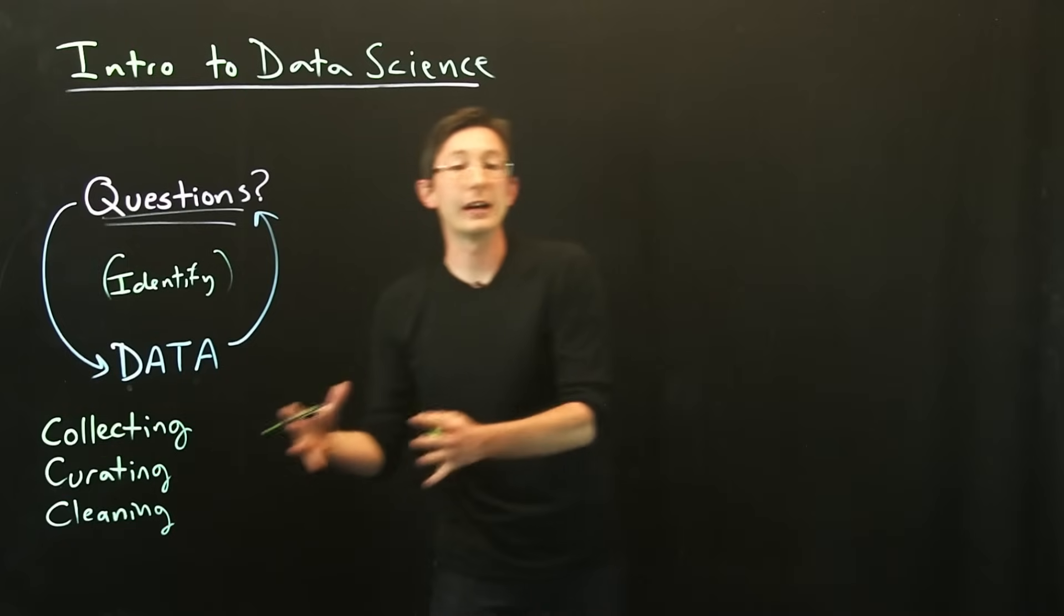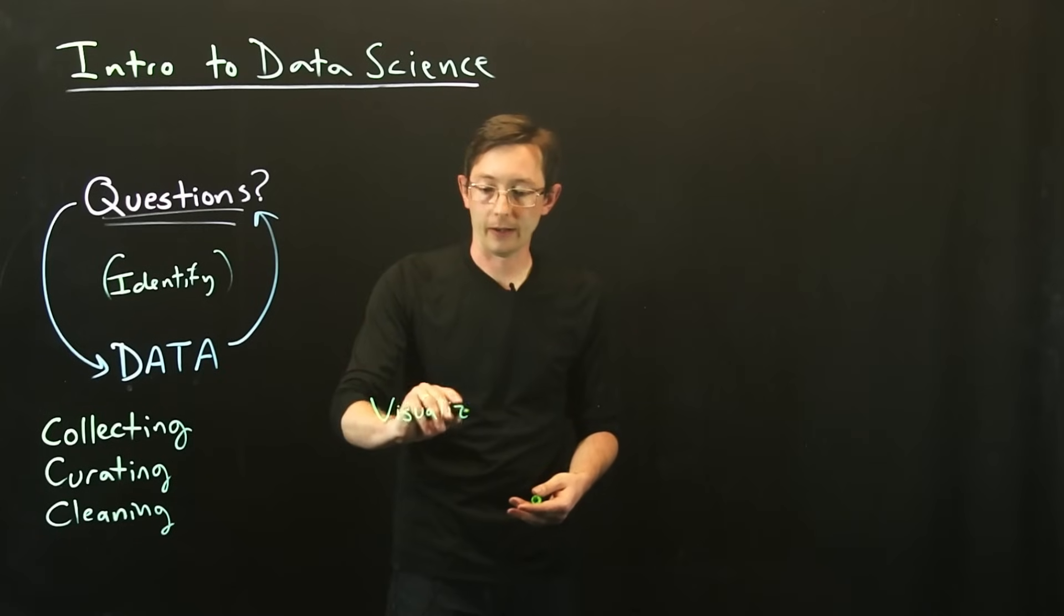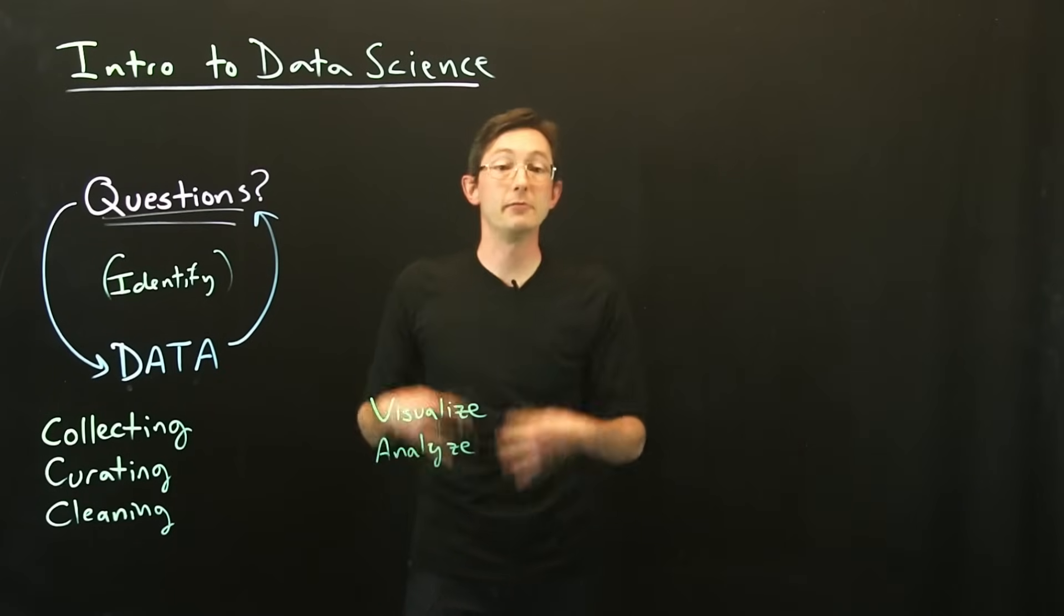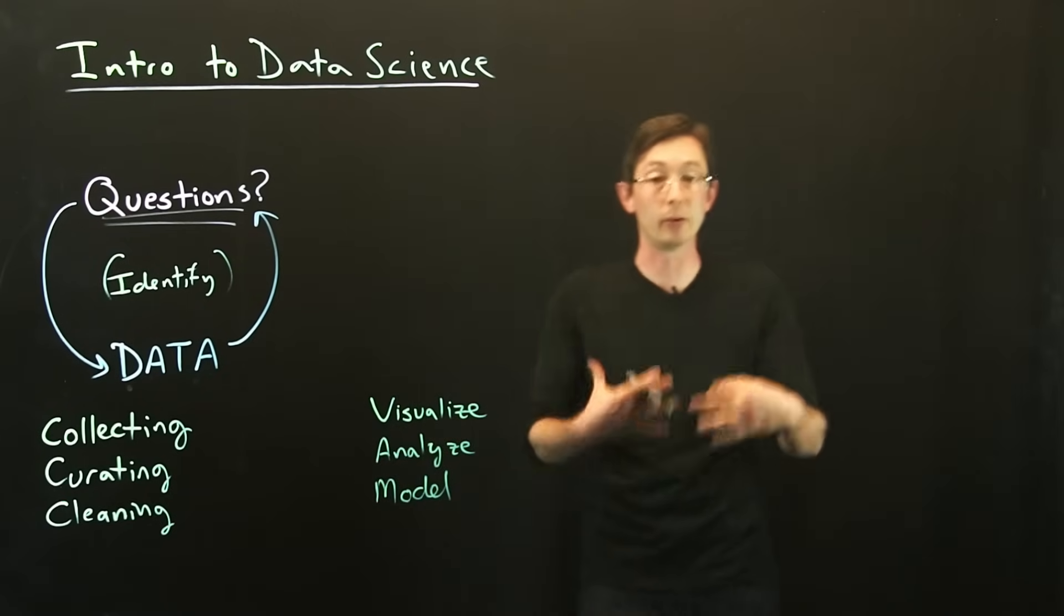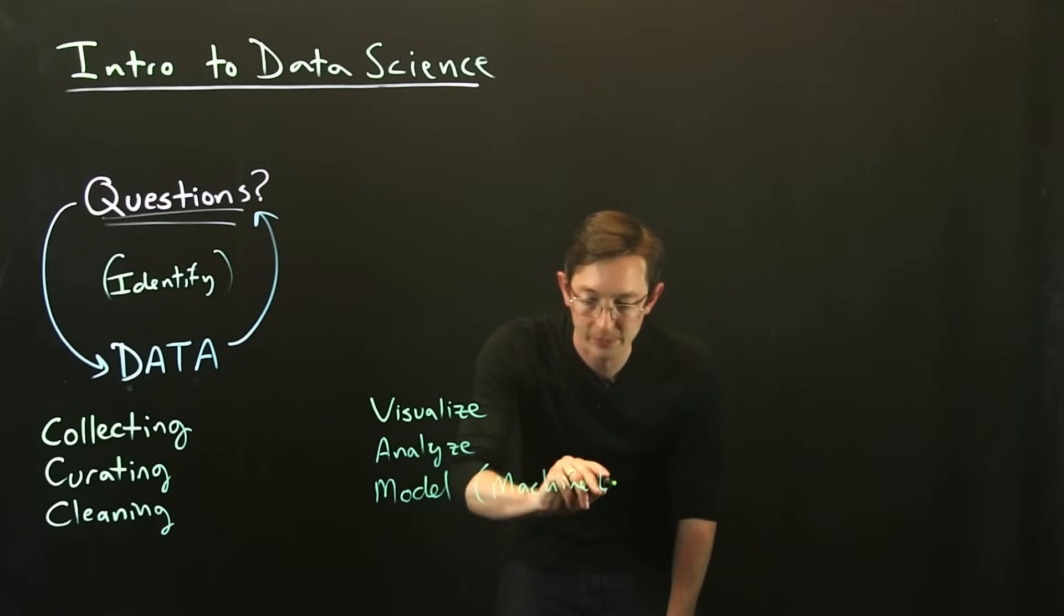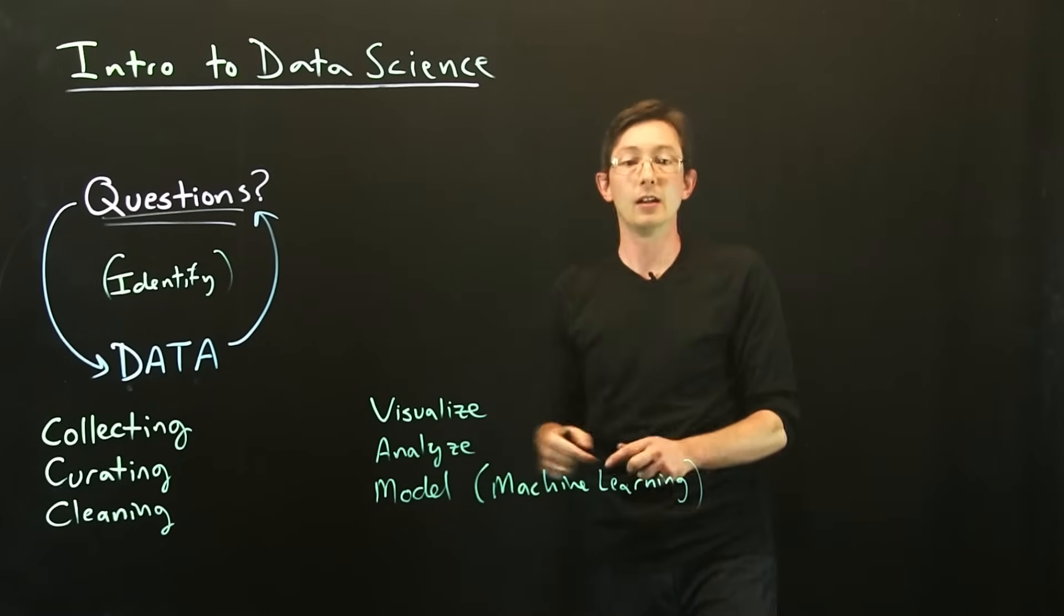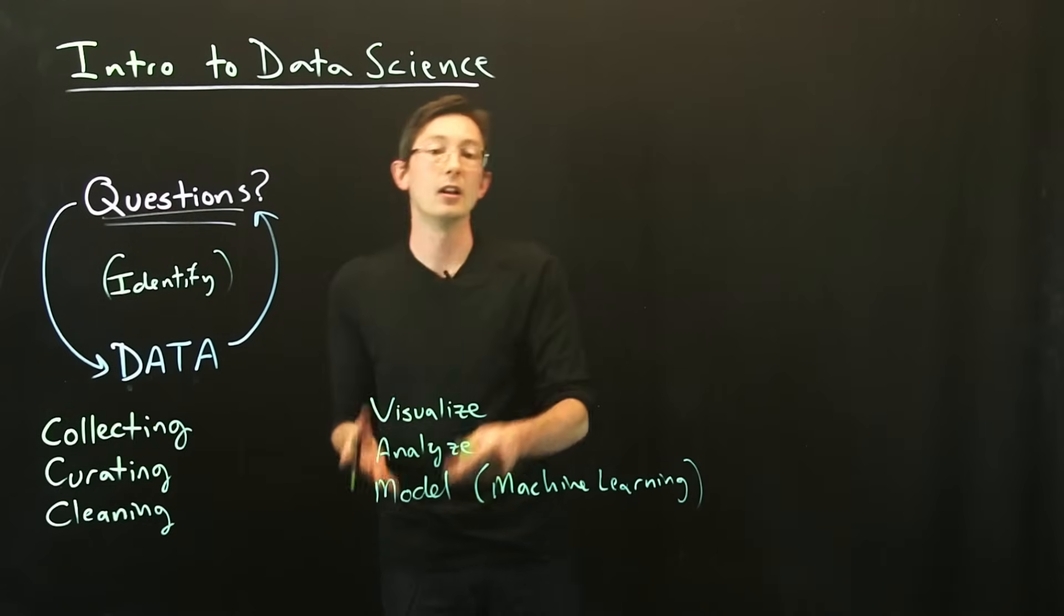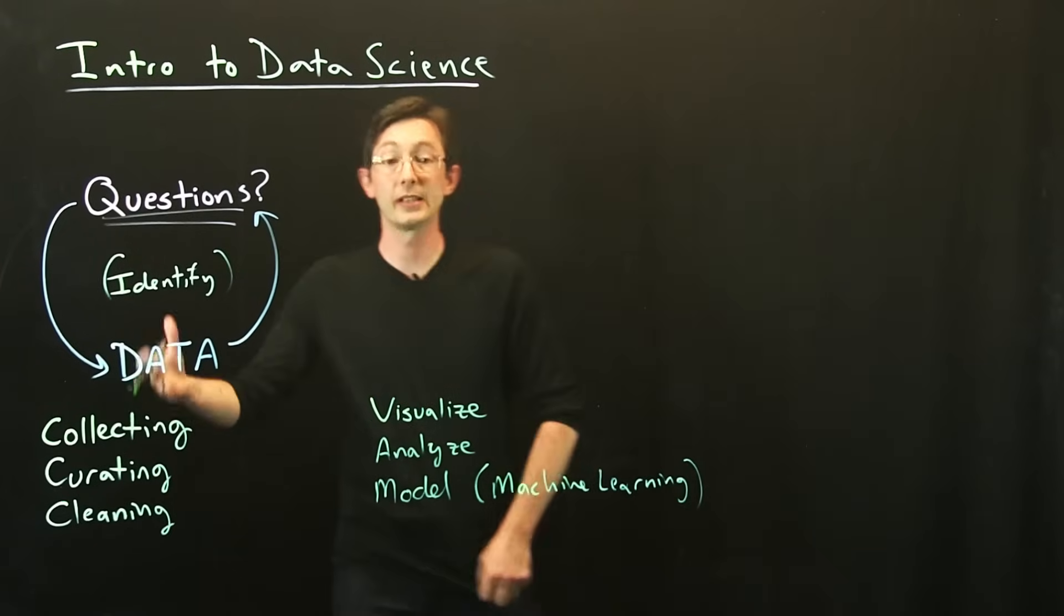And then what you want to do downstream of that are things like visualize. You want to analyze. And you might want to model, build models for prediction. You might want to build models that can be used and deployed in the real world. This is where machine learning comes in. So machine learning is super exciting. Lots of interest in developing these models from data. But you have to go through all of this hard work first. So tons of effort here to get to the fun part of visualizing, analyzing and modeling.